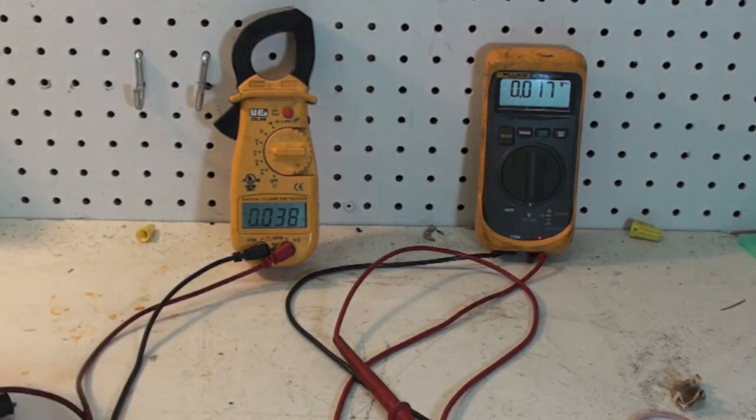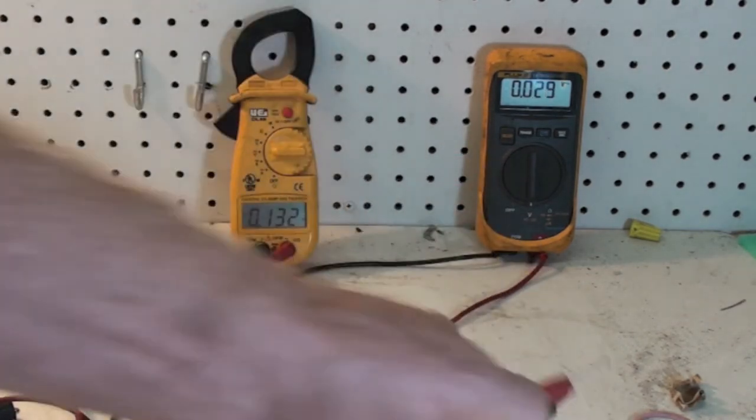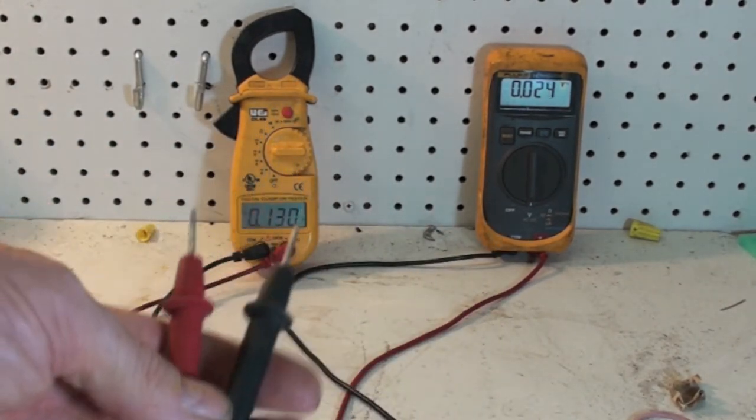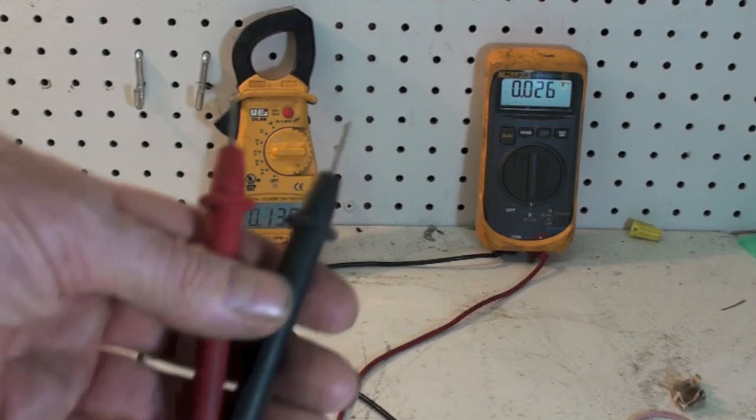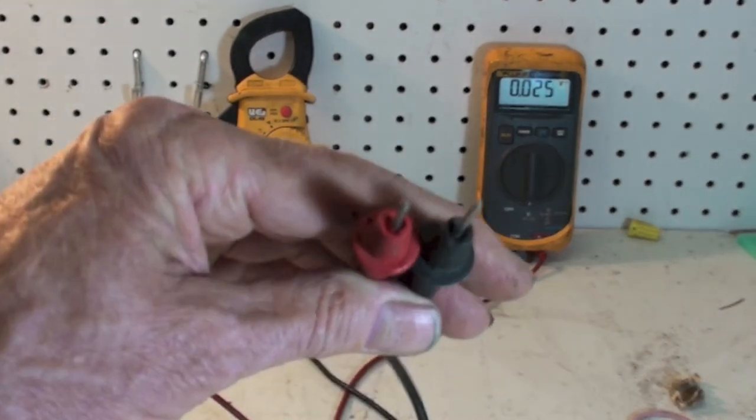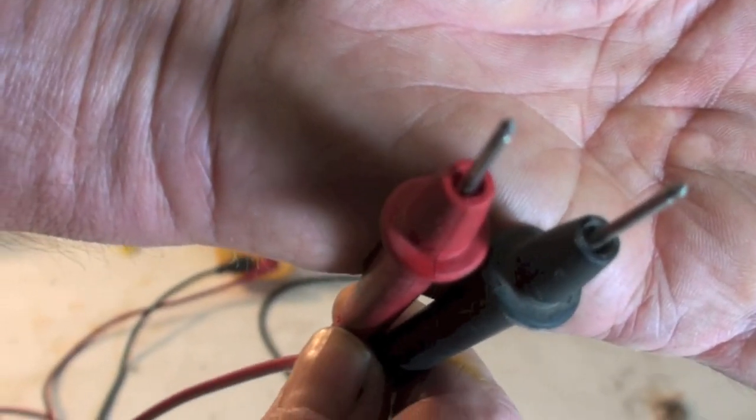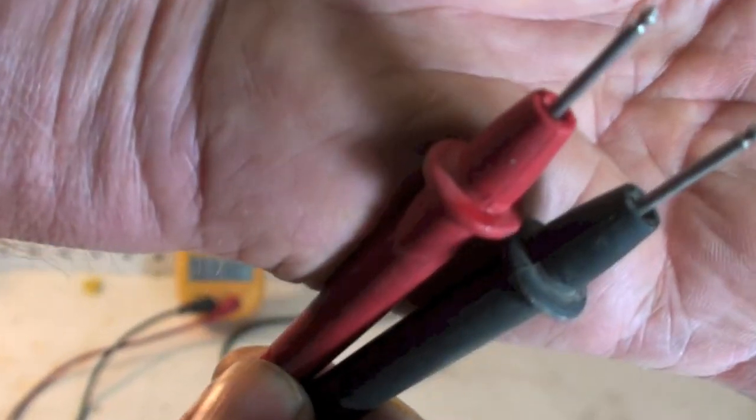This is a Fluke—that's a Fluke 16, it's replaced now by the Fluke 116. But if you look close at these, you can see they don't have the threads in there, so I can't put those on.